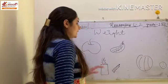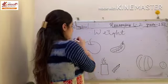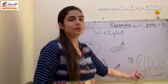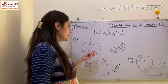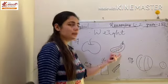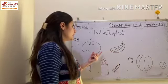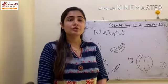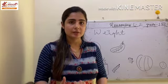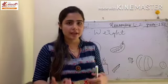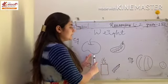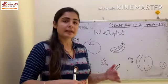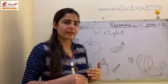First of all, you can see here on the board — there are three examples. So, what does weight mean? Weight means — koi aise object jinka weight ho, aur hum kaisa usko identify karenge — that which one is heavier, matlab kaunsa heavy object hai, and which one is lighter. Kaunsa object kam heavy hai aur lighter hai.